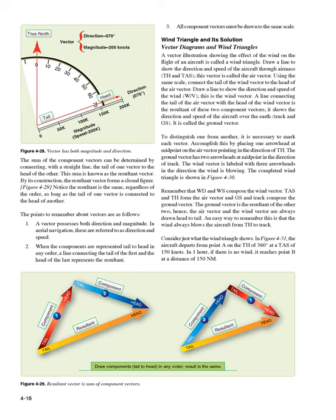To distinguish one from another, mark each vector. Place one arrowhead at midpoint on the air vector pointing in the direction of TH. The ground vector has two arrowheads at midpoint in the direction of track. The wind vector is labeled with three arrowheads in the direction the wind is blowing. The completed wind triangle is shown in Figure 4-30. WD and WS compose the wind vector; TAS and TH form the air vector; GS and track compose the ground vector. The air vector and wind vector are always drawn head to tail — the wind always blows the aircraft from TH to track.